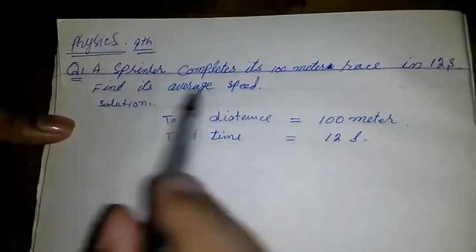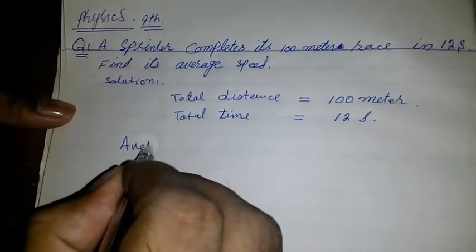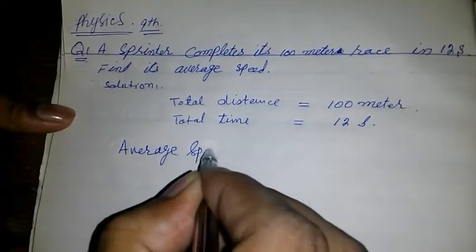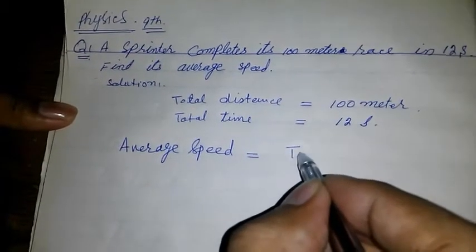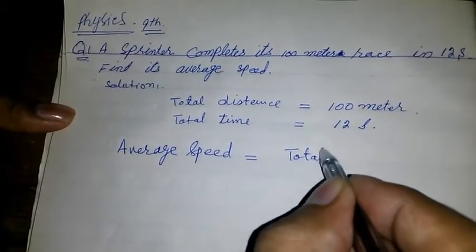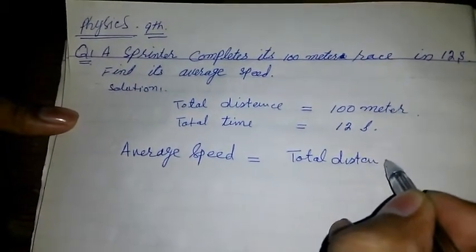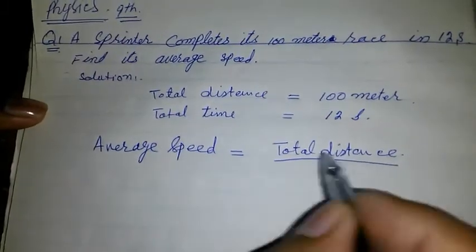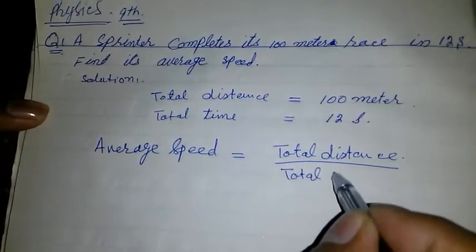We have to find its average speed. We know that average speed is equal to total distance divided by total time.